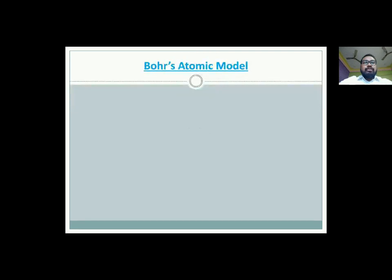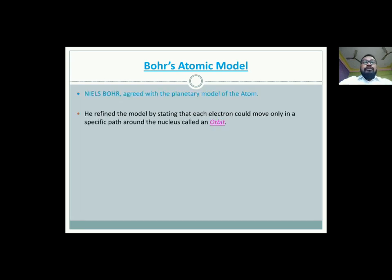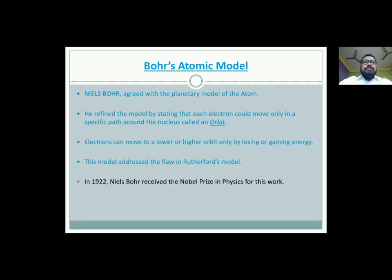First, we have the Bohr's atomic model. Niels Bohr, a Danish physicist, also worked under the guidance of J.J. Thomson. He agreed to the planetary model of Rutherford. However, he refined this model by stating that each electron could move only in a specific path around the nucleus called orbit. Next, electrons can move to a lower or higher orbit only by losing or gaining energy. This model addressed the flaw in Rutherford's model. In the year 1922, Niels Bohr received the Nobel Prize in Physics for his work on the structure of atom.